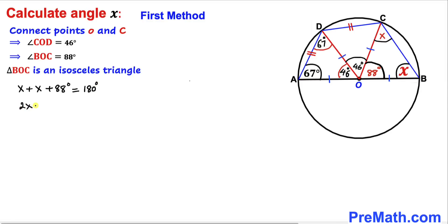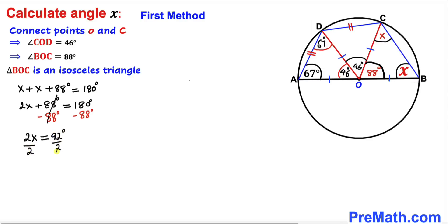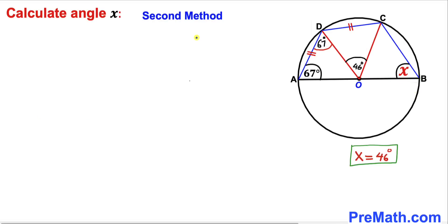Combining like terms gives 2x + 88 = 180 degrees. Subtracting 88 from both sides: 2x = 92 degrees. Dividing both sides by 2, angle x turns out to be 46 degrees. Now let me show you the second method.